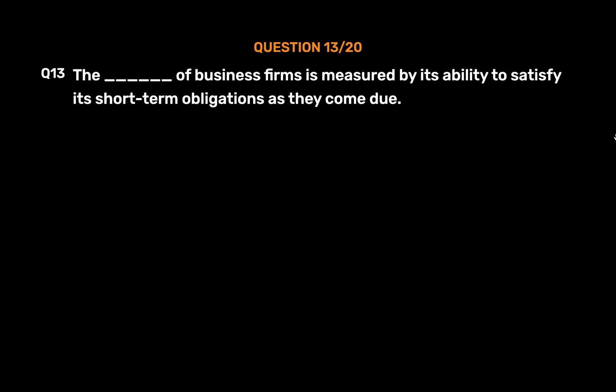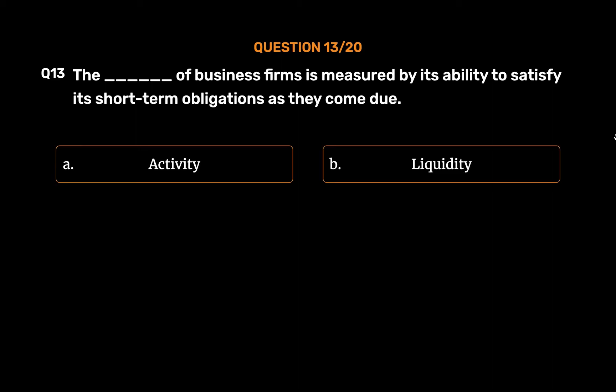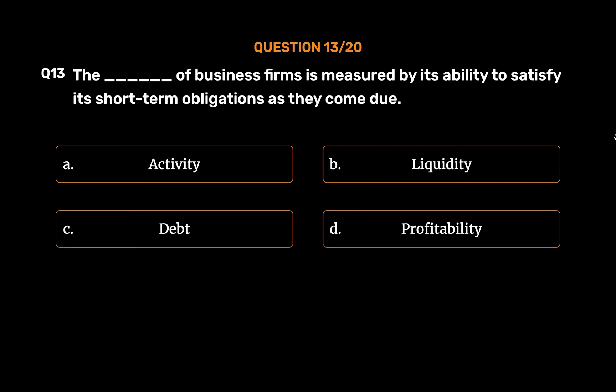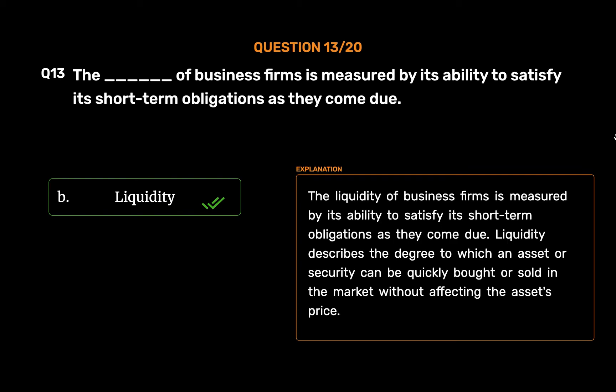Question number 13. The ability of business firms measured by its ability to satisfy its short-term obligations as they come due is known as: Option A: Activity. Option B: Liquidity. Option C: Debt. Option D: Profitability. The correct answer is Option B: Liquidity. The liquidity of business firms is measured by its ability to satisfy its short-term obligations. Liquidity describes the degree to which an asset or security can be quickly bought or sold in the market without affecting the asset's price.